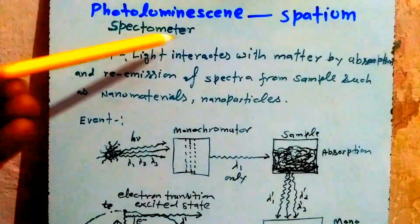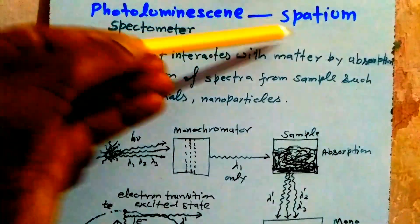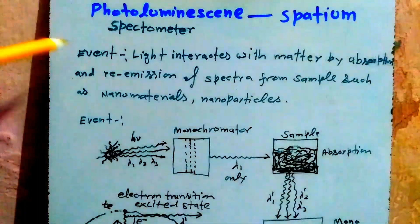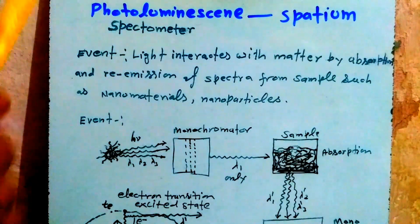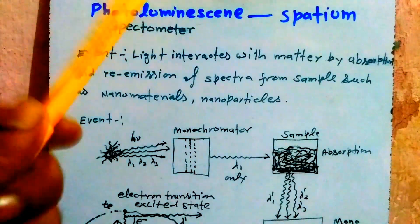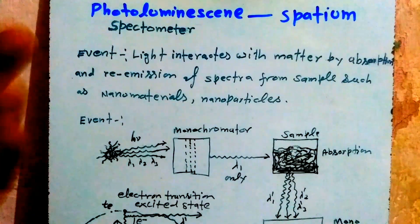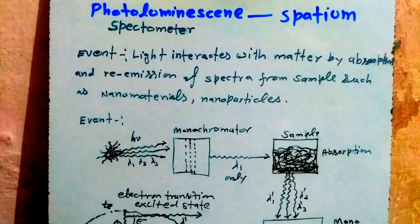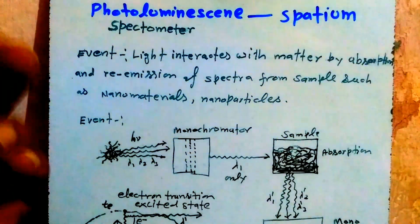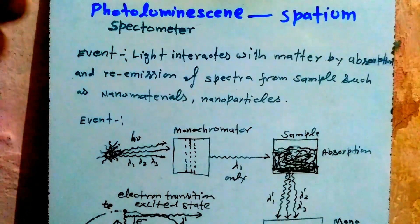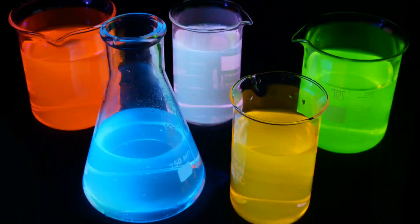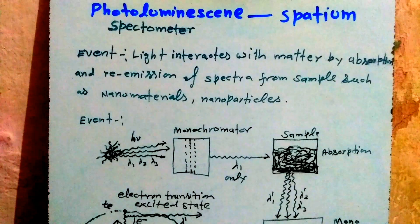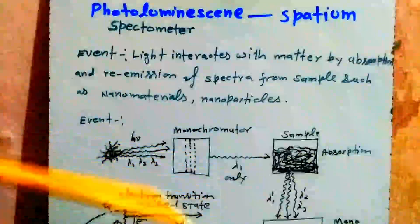Photoluminescence spectrometer from Spartium. The main concept of the photoluminescence phenomenon is the interaction of light with matter by means of absorption and re-emission of spectra from the surface of samples such as nanomaterials and nanoparticles.